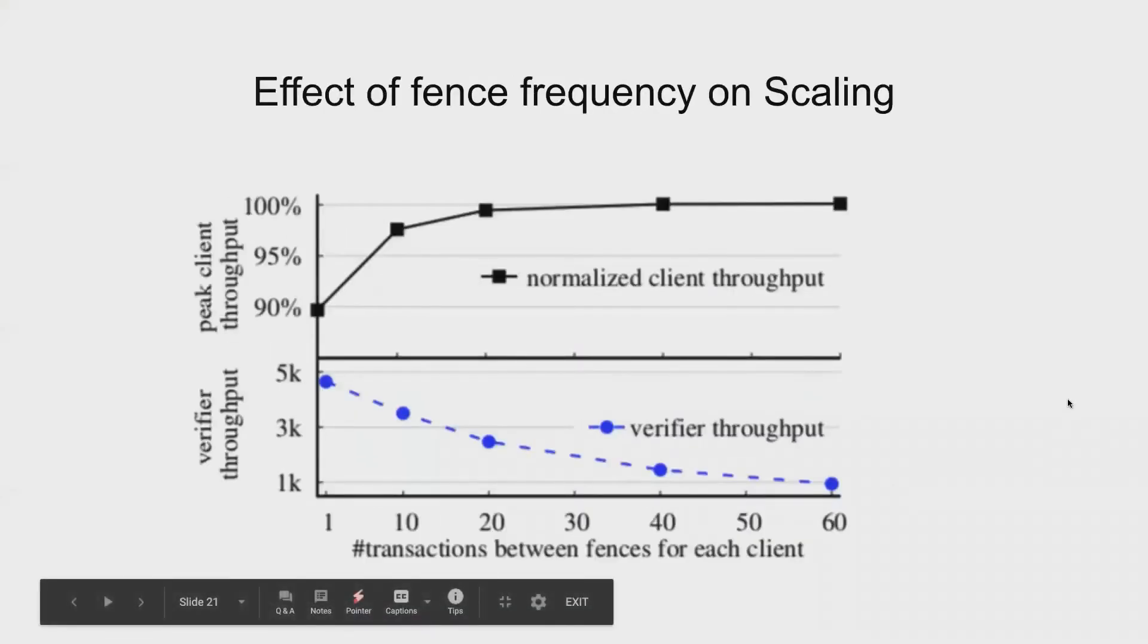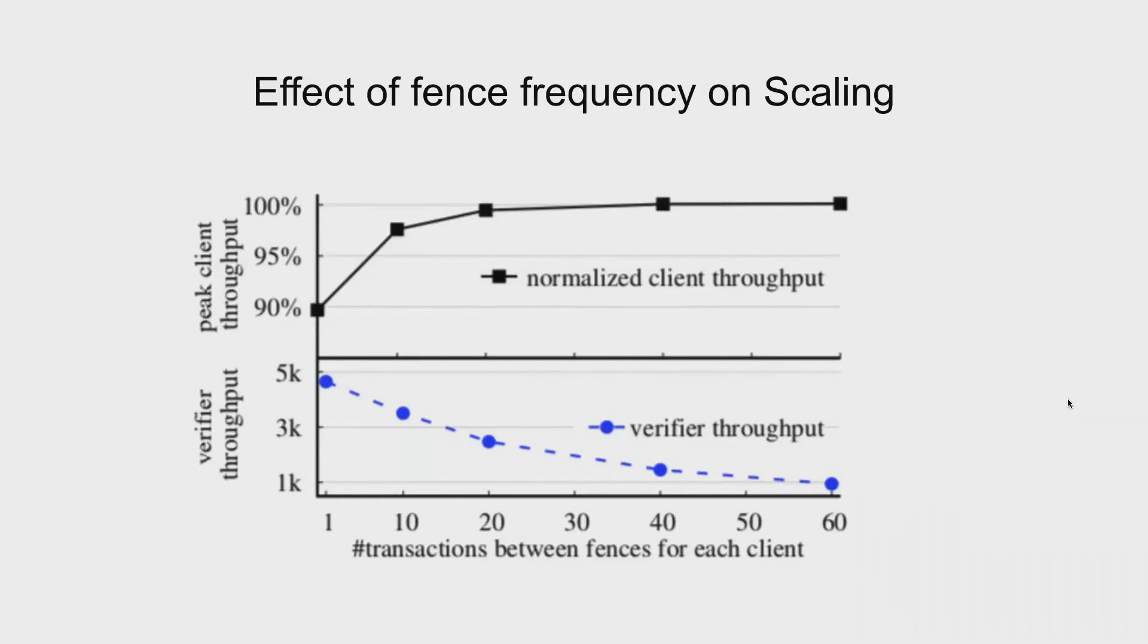So we discussed about fence frequency before this and this figure tells us what's the effect of fence frequency on the number of transactions. The Cobra verifier has better throughput if fence transactions are issued more frequently. If you see here, number of transactions between fences for each client, this can be due to the smaller epoch sizes, smaller epoch sizes allows all the transactions to be GC earlier and thus our problem space is reduced. Fence transactions, if you remember, they also introduce session ordering. So all of those ordering constraints further prune our search space. However, all of these, like a fence frequency is high, these do sacrifice client throughput due to resource contention.